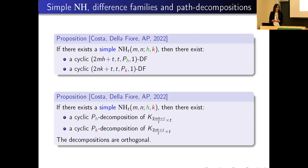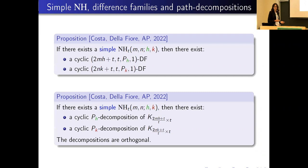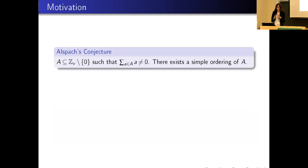The two difference families are on the same group relative to the same subgroup considered in the array, so we obtain two cyclic path decompositions of the complete multipartite graph. Moreover, these decompositions are orthogonal: if you take an arbitrary block of the first decomposition and a block of the second one, these two blocks have at most one edge in common.